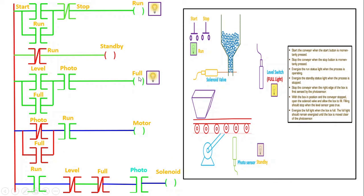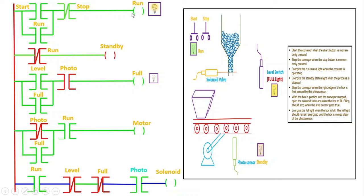There is another contact with the same address as 'full' — once full is energized here, it energizes that contact as well. Because full is energized in that rung, current flows through that path and the motor starts rotating again. The conveyor starts moving, the box moves out of the vicinity of the photosensor, and the photosensor goes back to low state — it gets de-energized. Consequently, that contact becomes open circuit and the full status light stops glowing. The process then repeats again.